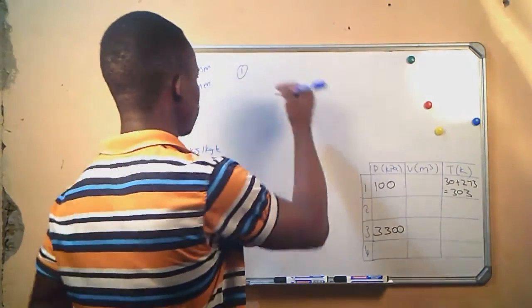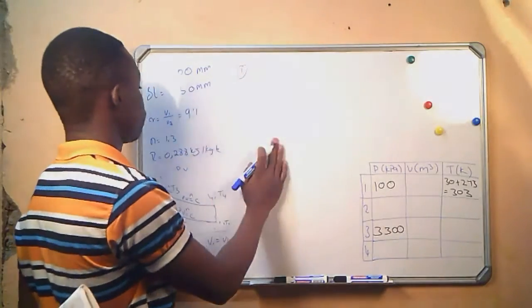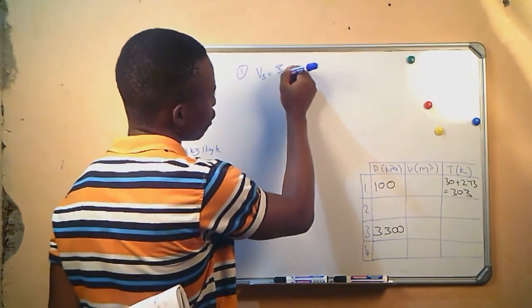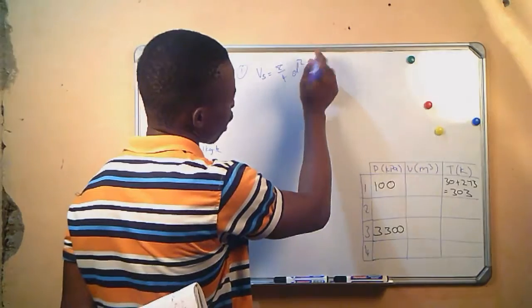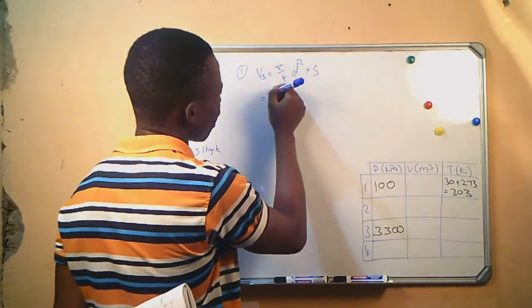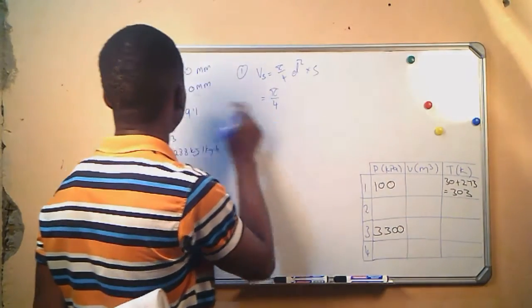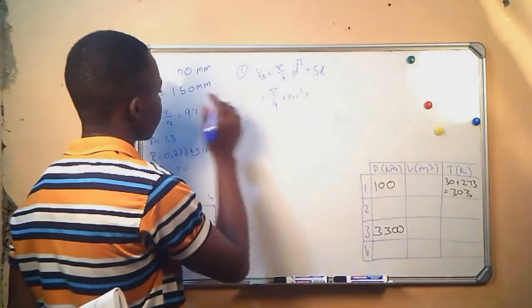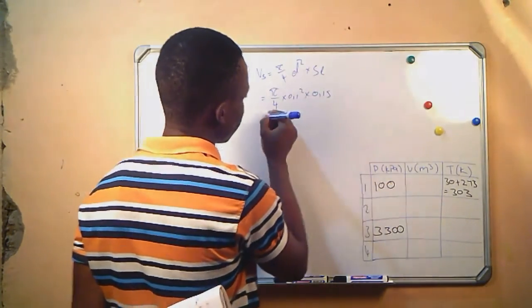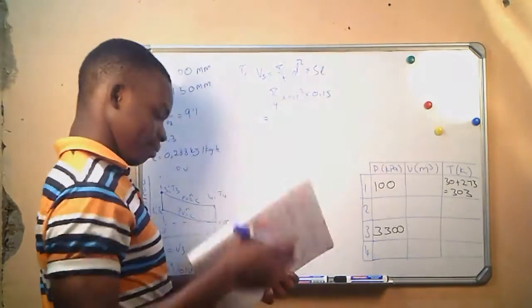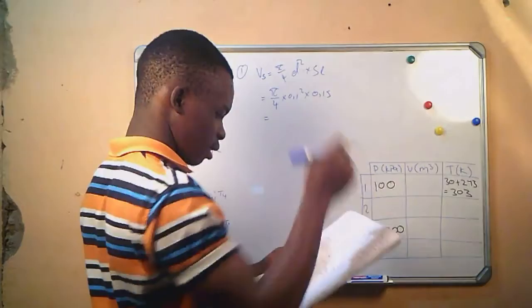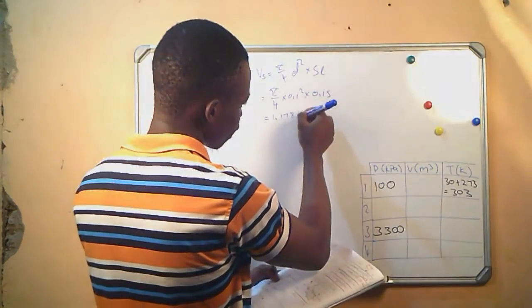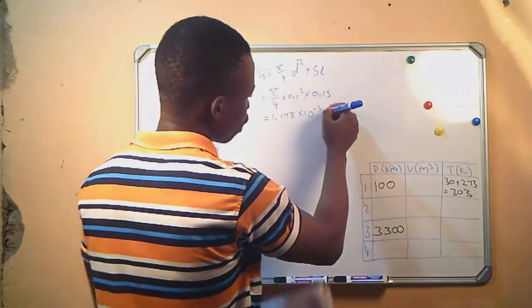We start by calculating Vs, the swept volume, given by pi divided by 4, times D squared, times the stroke length. So pi over 4, times 0.1 squared, times 0.15. We get that our swept volume is 1.178 times 10 to the power of negative 3 cubic meters.